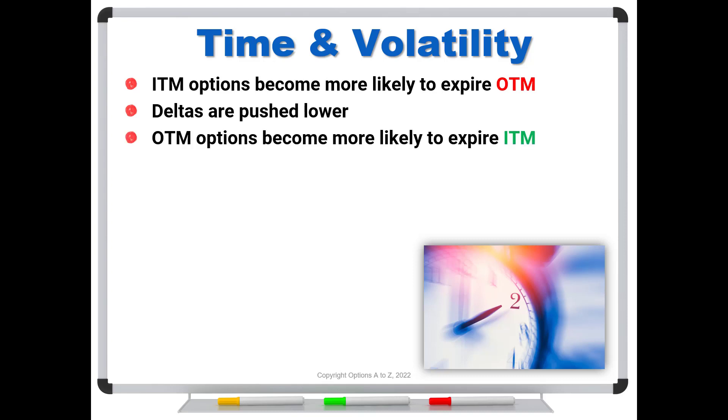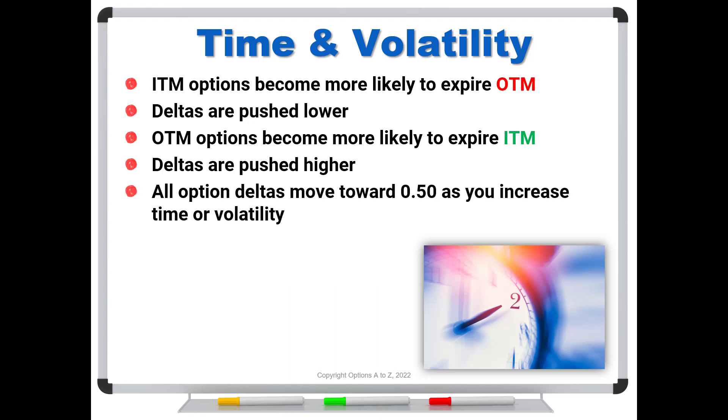Well, the opposite is true for the out of the money options. Out of the money options become more likely to expire in the money if you crank up the time to expiration, or if you increase volatility. And as a consequence, the deltas are pushed higher. So the basic idea is that your in the money options and your out of the money options start to move towards 50. In other words, all option deltas start to push towards 50 as you increase time or volatility.